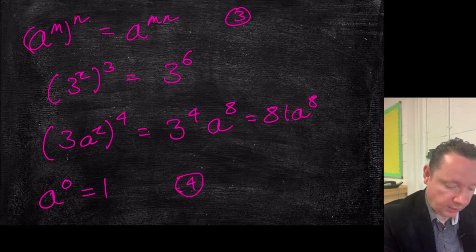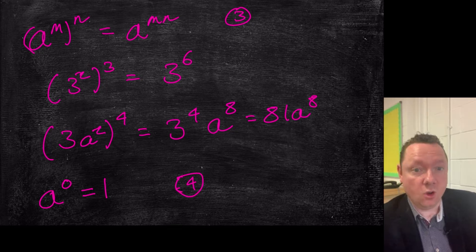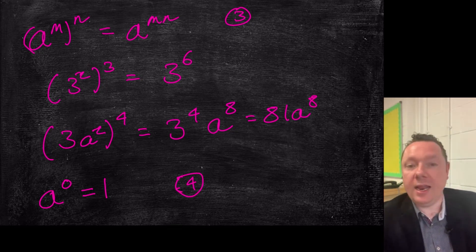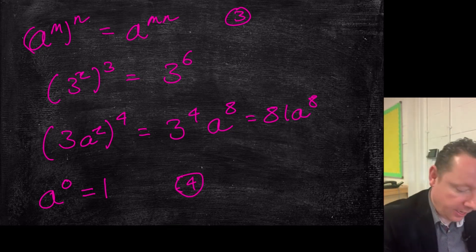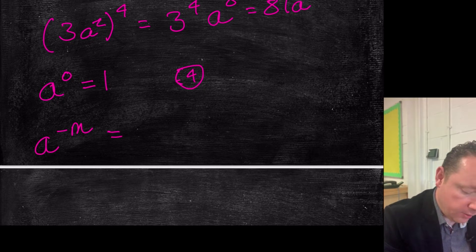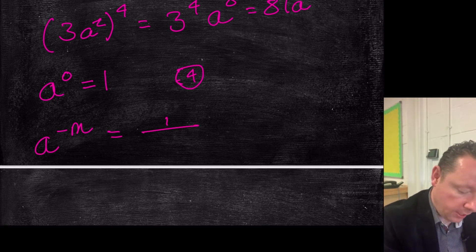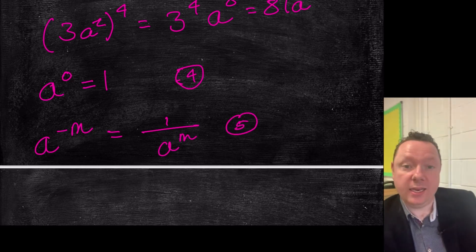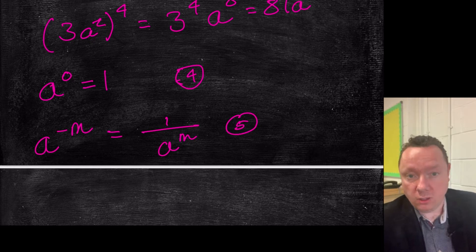You really need to just know and remember these laws. Let's take a negative index. So let's say we had a to the minus m. We can rewrite that as one over a to the m. Or conversely, if I had one over a to the m, I can write it as a negative power.